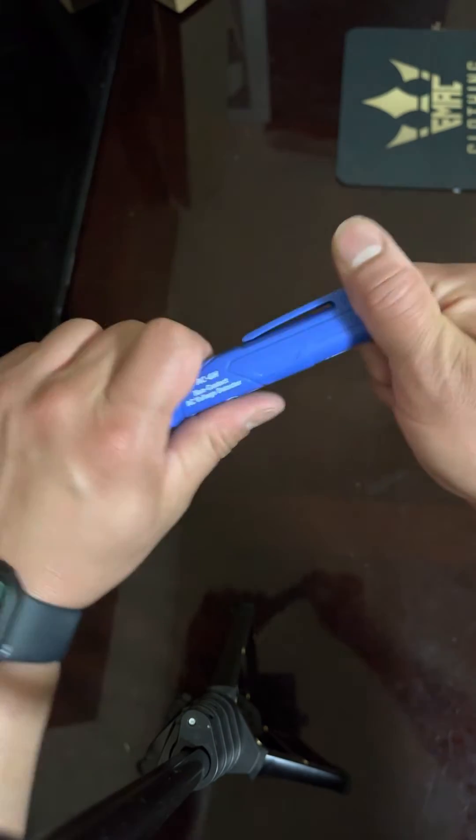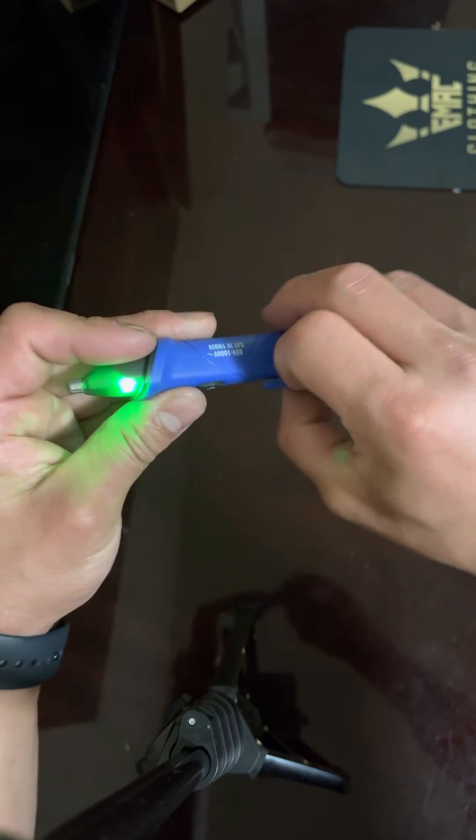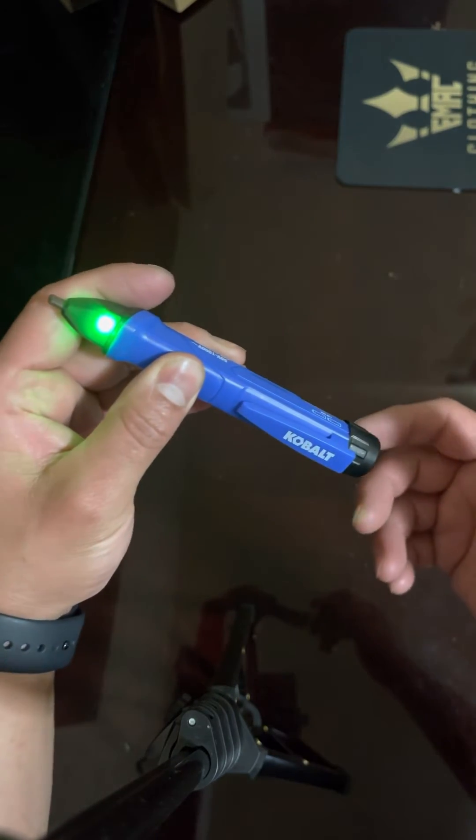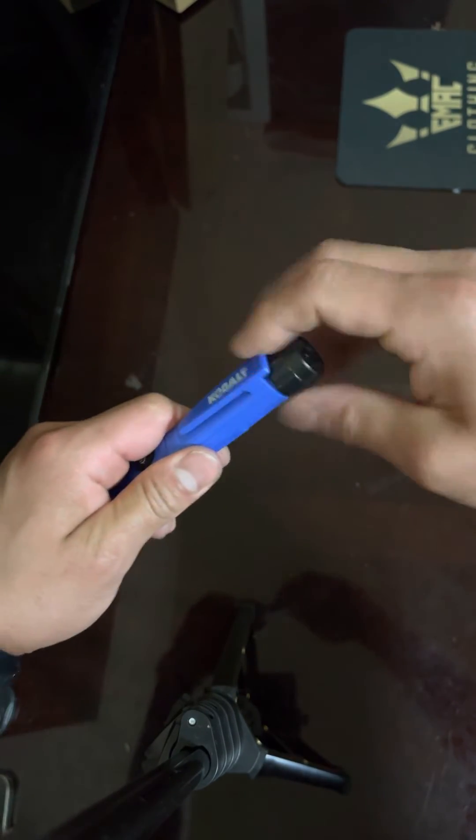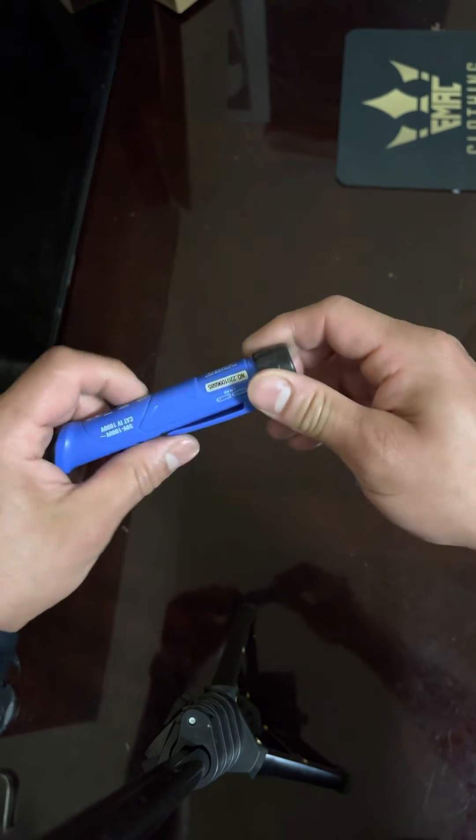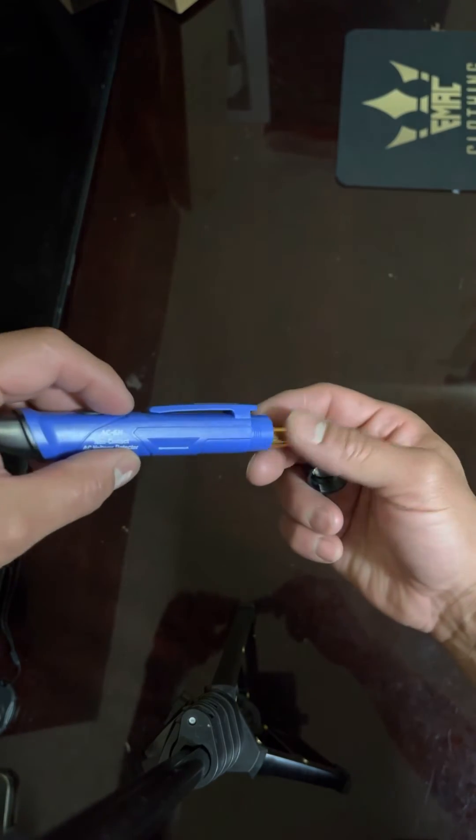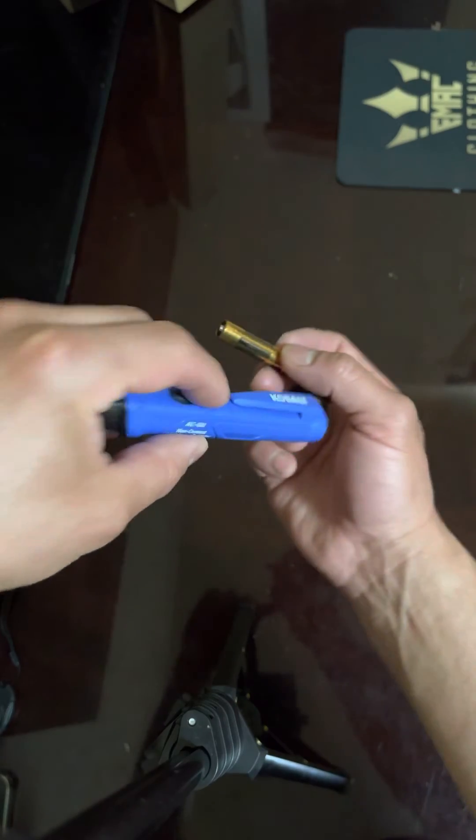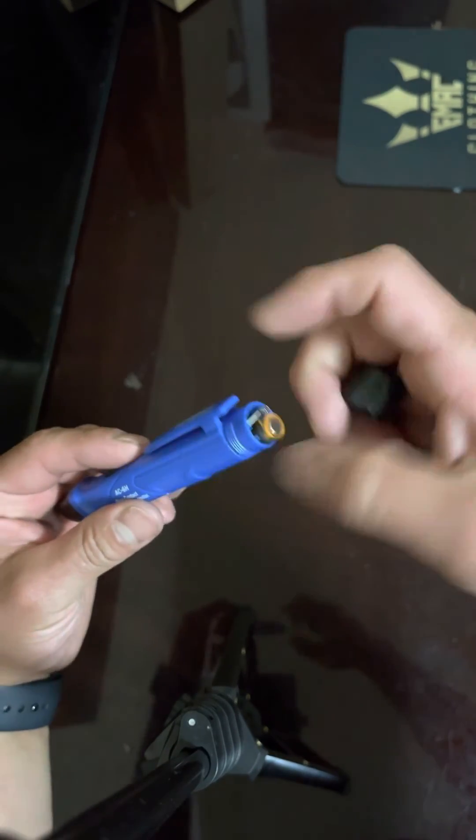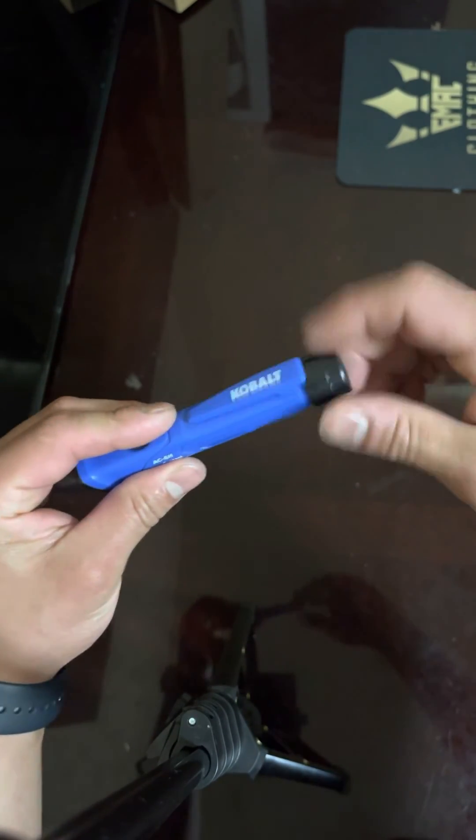non-contact voltage detector has a pen clip right here. It's like a pen, probably weighs less than a pen. It does come with batteries—it says two triple-A, yep, two triple-A batteries. So if you're an electrician